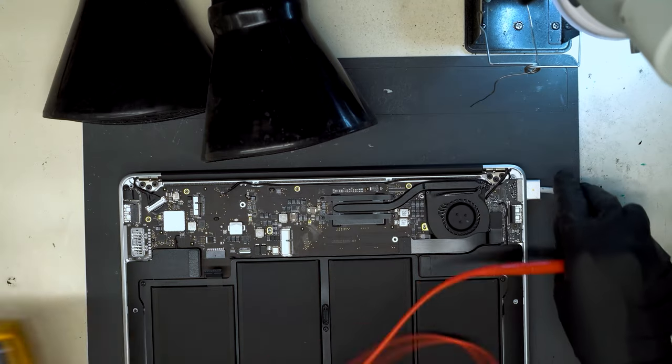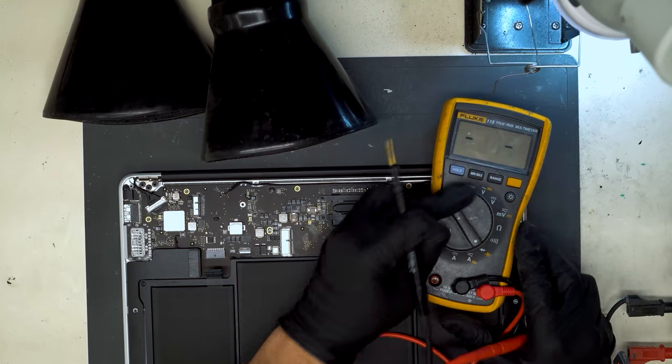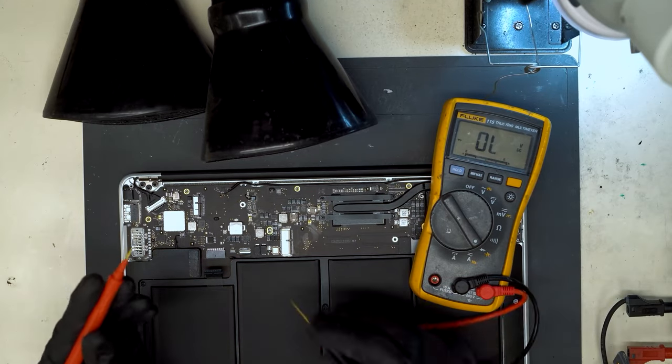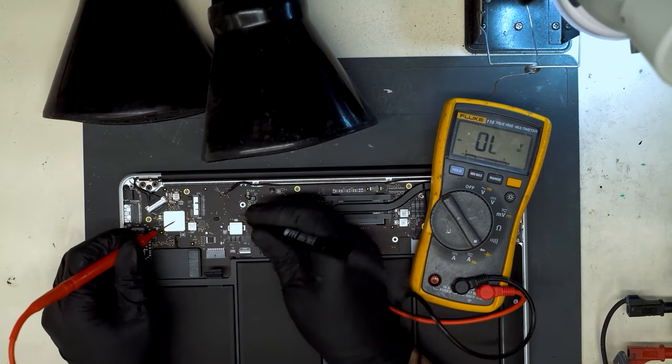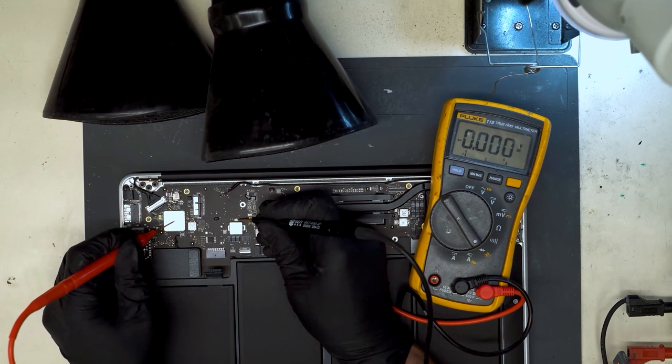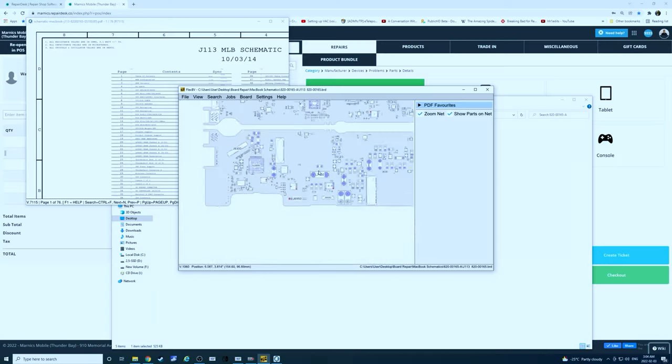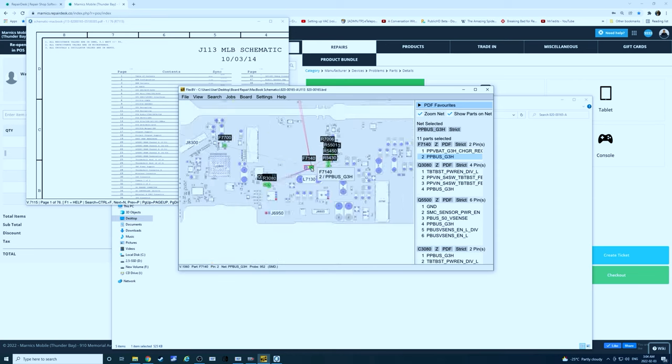Next thing I'll do is unplug power to the machine, switch the multimeter to diode mode. On this setting we're going to use red probe on ground and measure, and we actually identify a full short to ground on PPBus G3 hot. This is where we were measuring PPBus. So this is where we found our short.